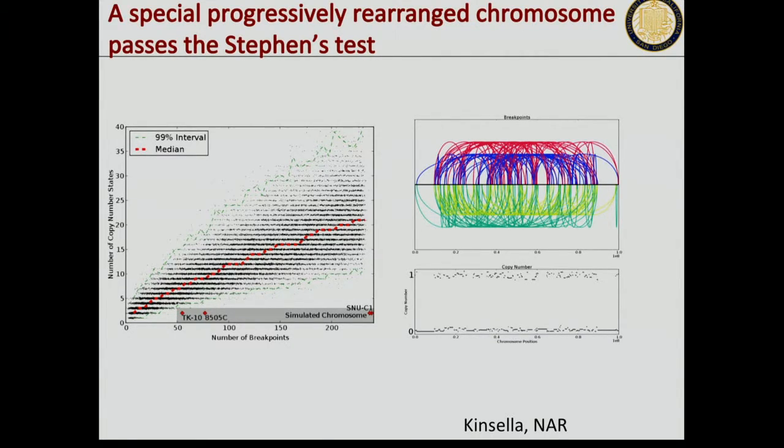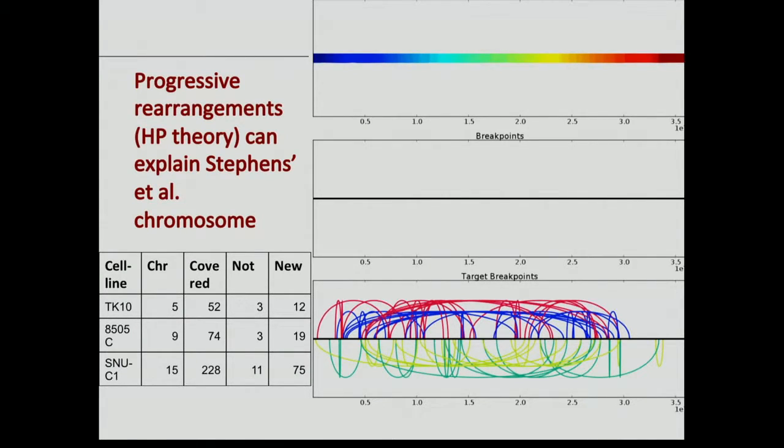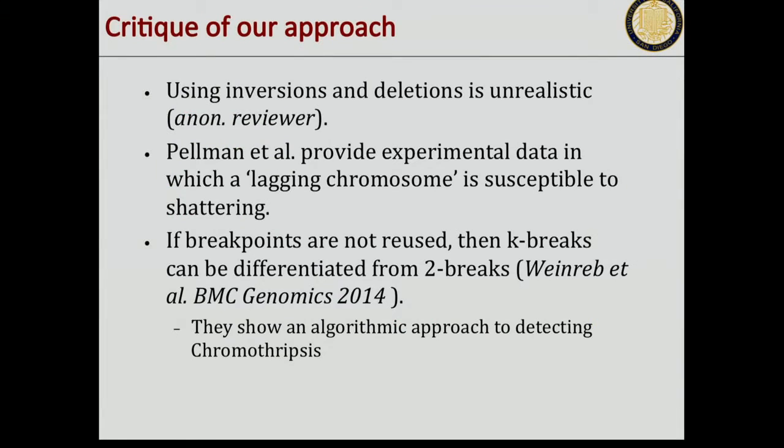Finally, we did it the other way around. We used rearrangement theory with breakpoint graphs and minimum rearrangement distance. We showed that if you take one of their examples, this is the example to the far right, and you try to mimic through a series of progressive rearrangements, you get all these rearrangements. But you mainly use inversions and deletions to minimize the number of copy number states. If you did that in a clever fashion, you can actually get it.